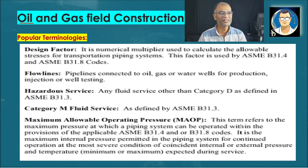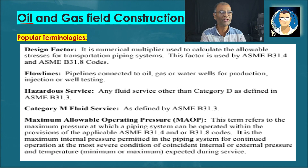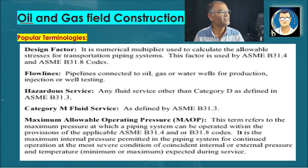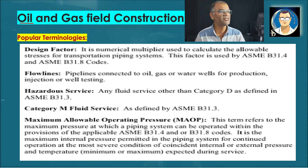Design factor: it is a numerical multiplier used to calculate the allowable stresses for transportation piping systems. This factor is used by ASME B31.4 and B31.8. Flow lines are pipelines connected to oil, gas, or water wells for production, injection, or well testing. Hazardous service refers to any fluid service other than Category D as defined in B31.3. Category M fluid service is as defined by ASME B31.3.